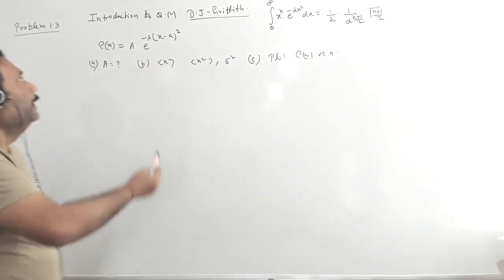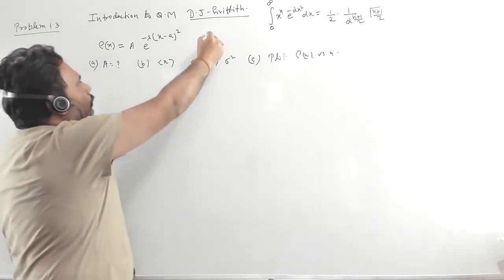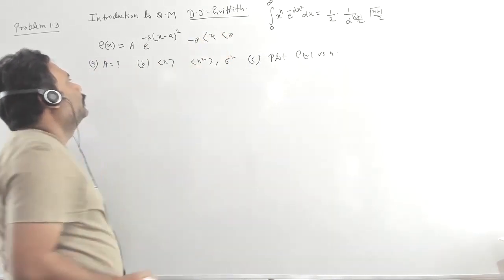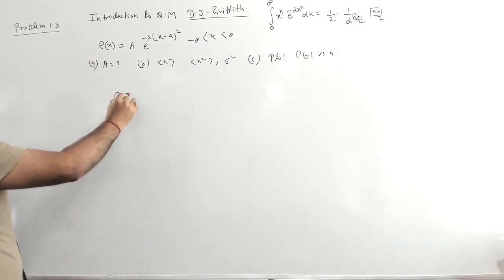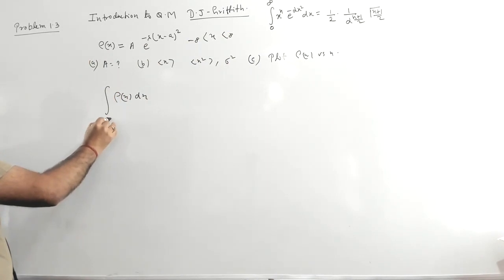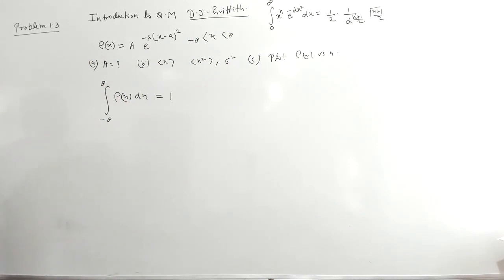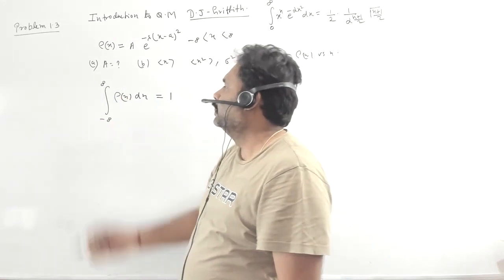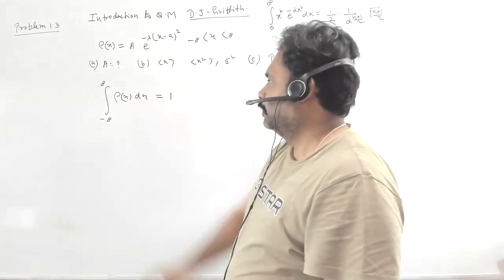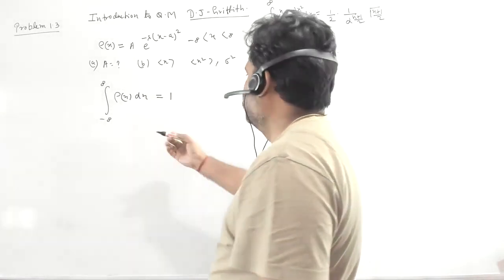Now, if ρ(x) is your probability density and x is going from minus infinity to plus infinity, then obviously the integral of ρ(x) dx from minus infinity to plus infinity must be equal to 1. This is the basic property of any probability density.